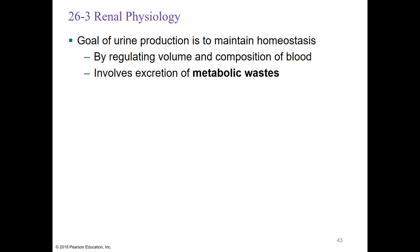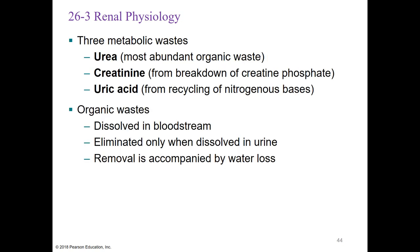The goal of urine production is to maintain homeostasis by regulating the volume and composition of blood while excreting metabolic waste. The three top metabolic wastes are urea (the most abundant, from breakdown of amino acids), creatinine (from breakdown of creatine phosphate generated in skeletal muscle), and uric acid (from recycling of nitrogenous bases). These organic wastes are dissolved in the bloodstream and eliminated only when dissolved in urine; their removal is accompanied by water loss.